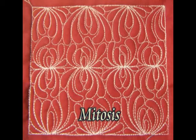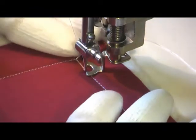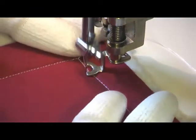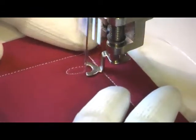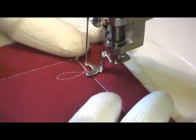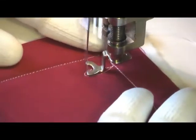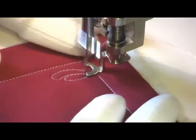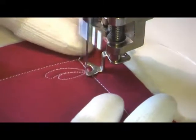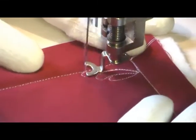This is the free motion quilting tutorial for Mitosis. Start on the edge of your quilting space and come up with a teardrop shape. Then move to the edge of that and feather around it, forming some beautiful free-form feathers all to the side of that teardrop.